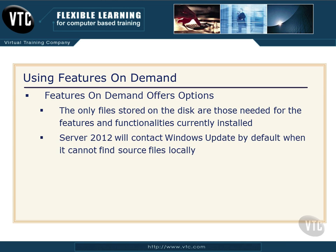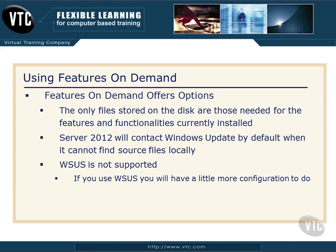Server 2012 will contact Windows Update by default when it can't find something locally. So if we install Server 2012, come back later and say we want to turn on some other service, then if it's not on that disk — if we're using Features on Demand, it won't be — then it will automatically connect to Windows Update and try to pull that source down. However, you've got to be careful here. Watch for this on the exam and in the real world: the Windows Server Update Service is not supported here. So if you're using that, you're going to have to have a little bit more configuration done.